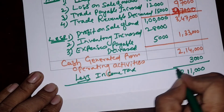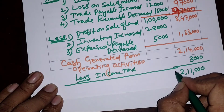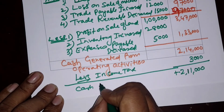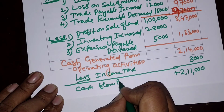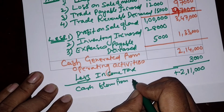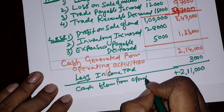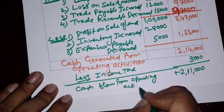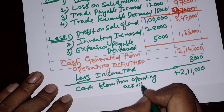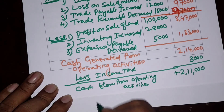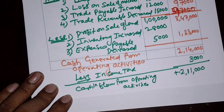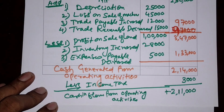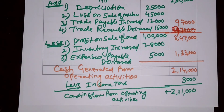This ₹2,11,000 is a positive answer; therefore it is called 'cash inflow from operating activities.' When the answer is positive, it means cash inflow from operating activities. Thank you very much.